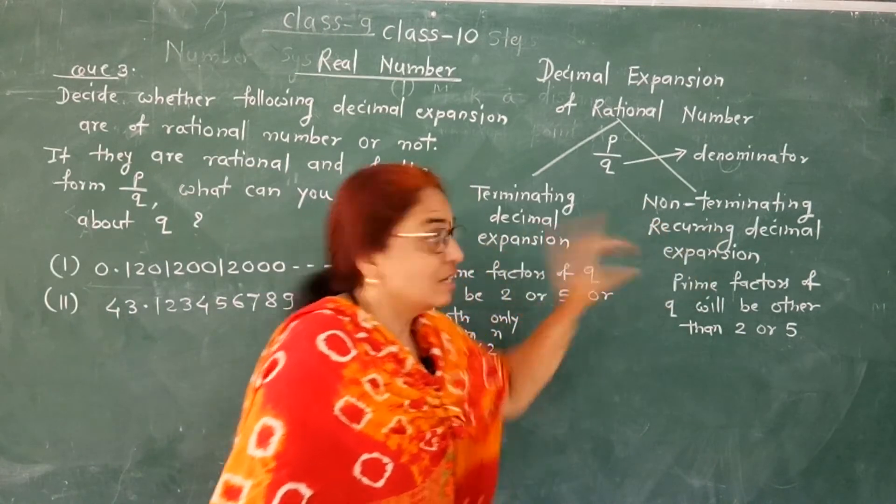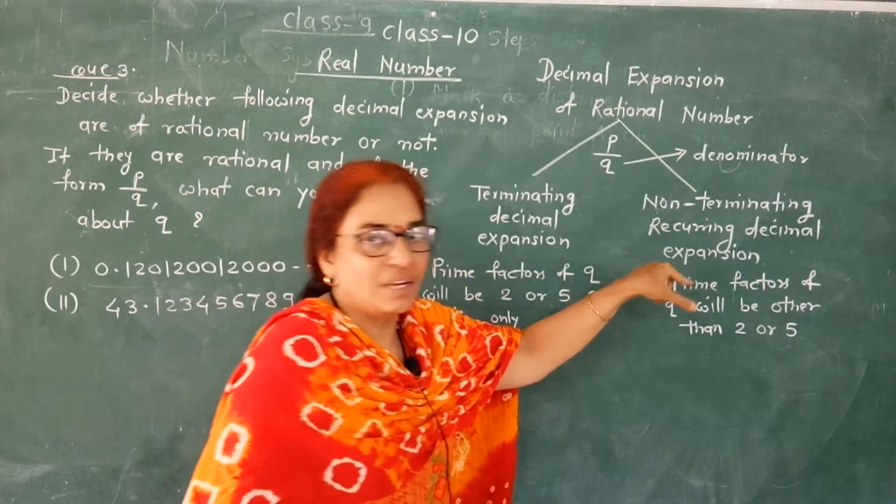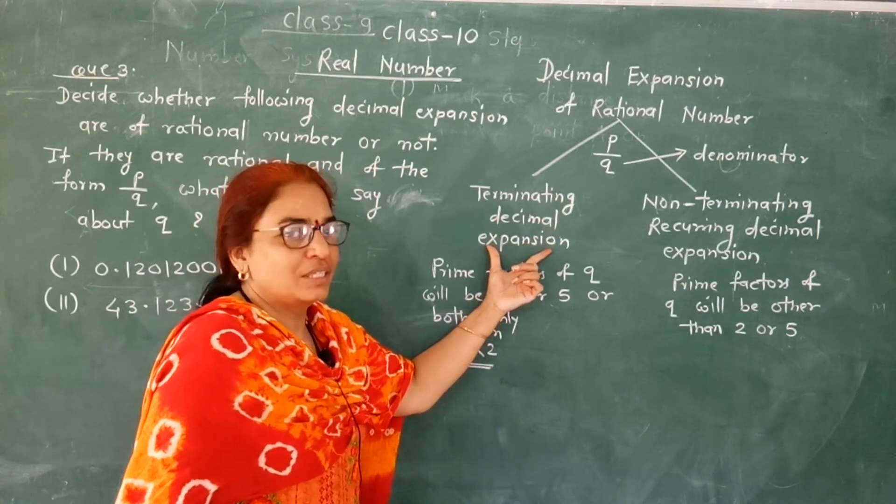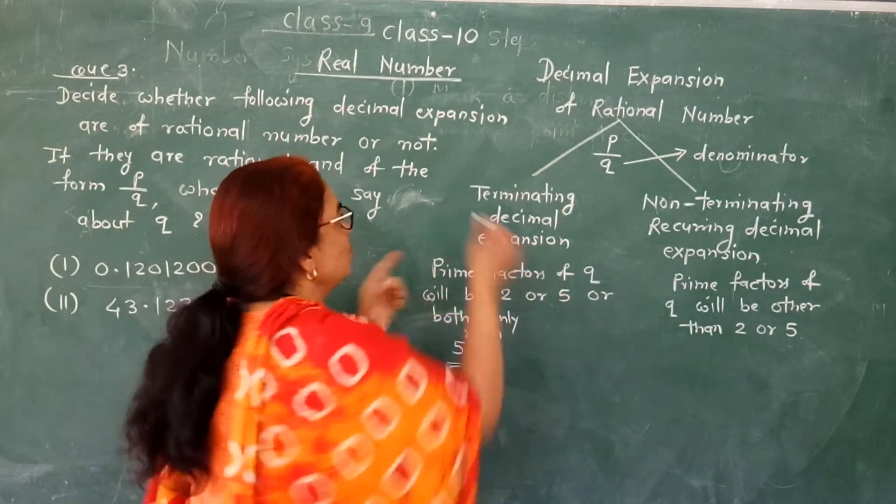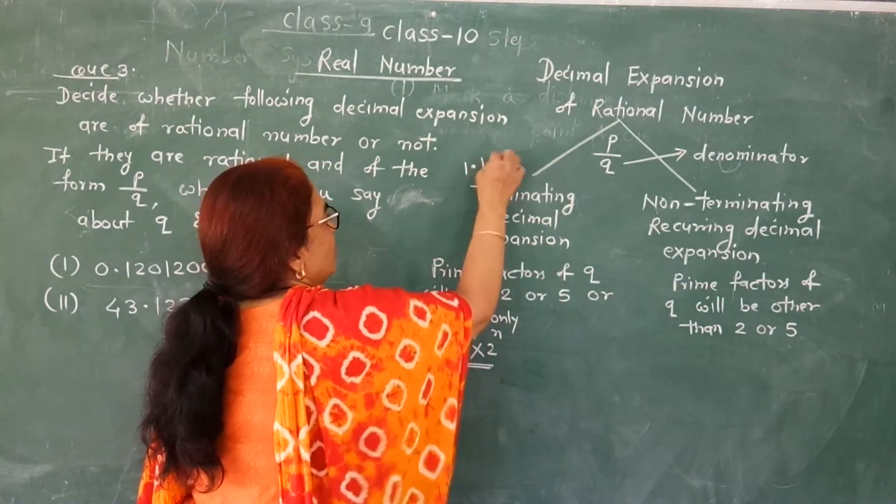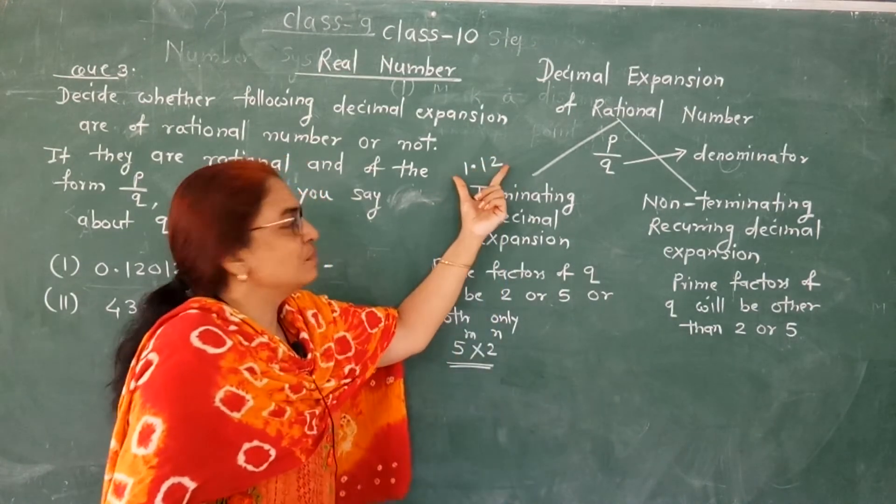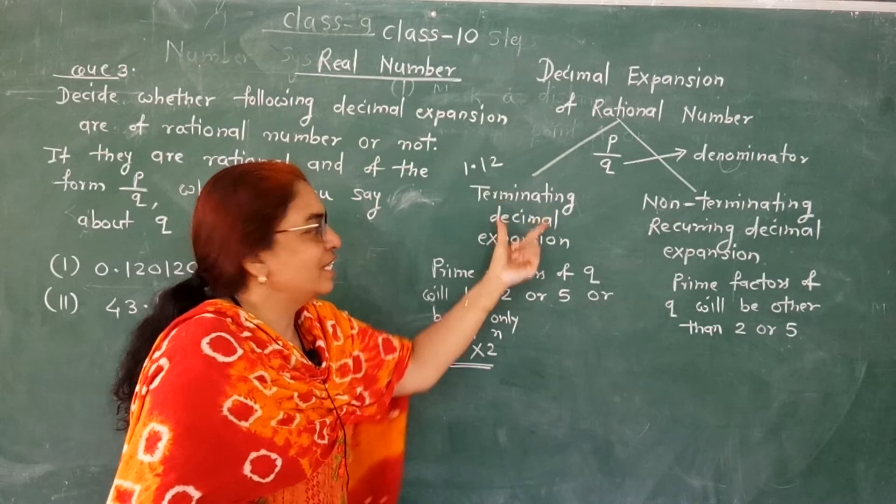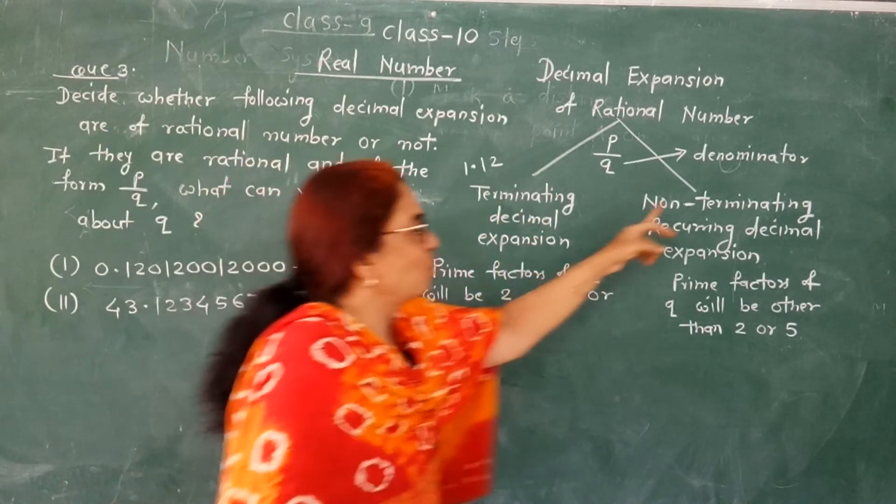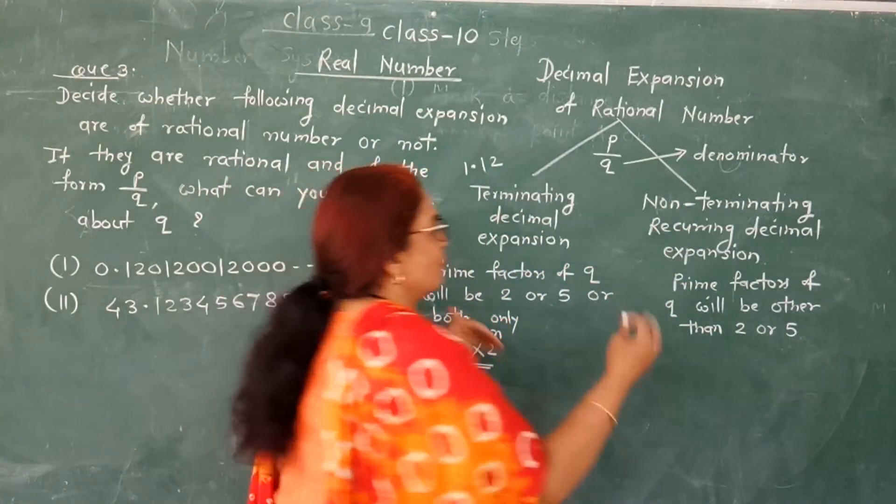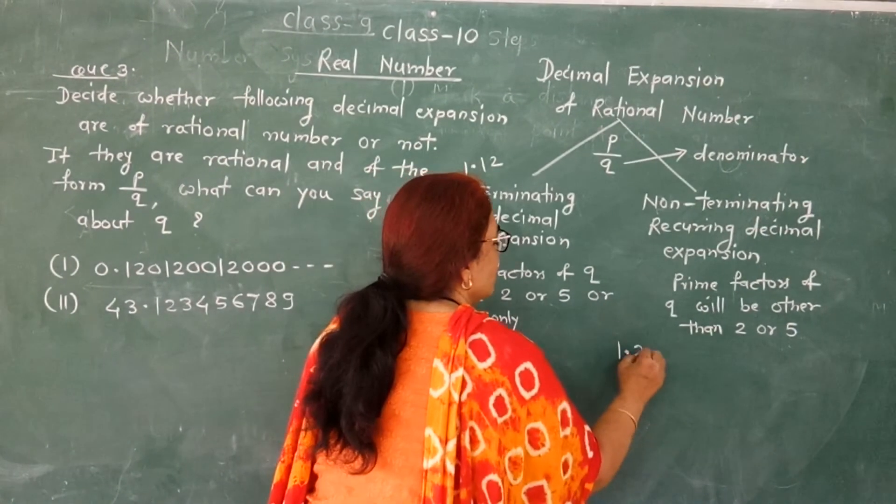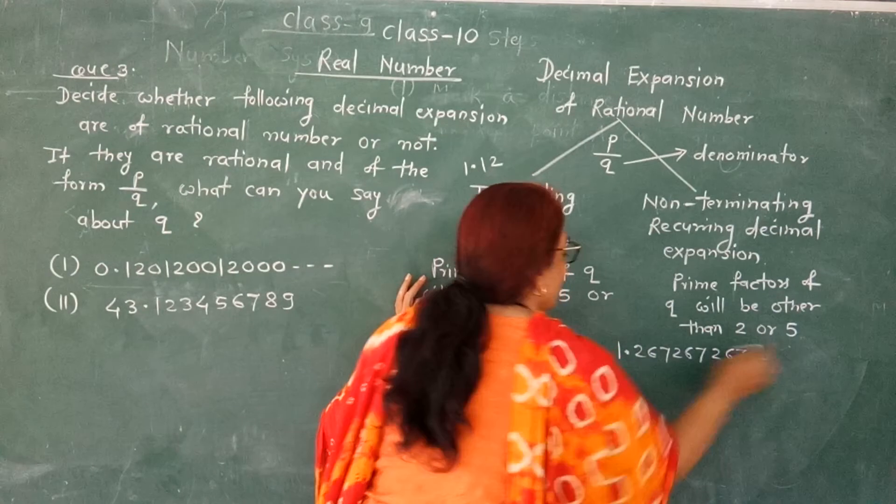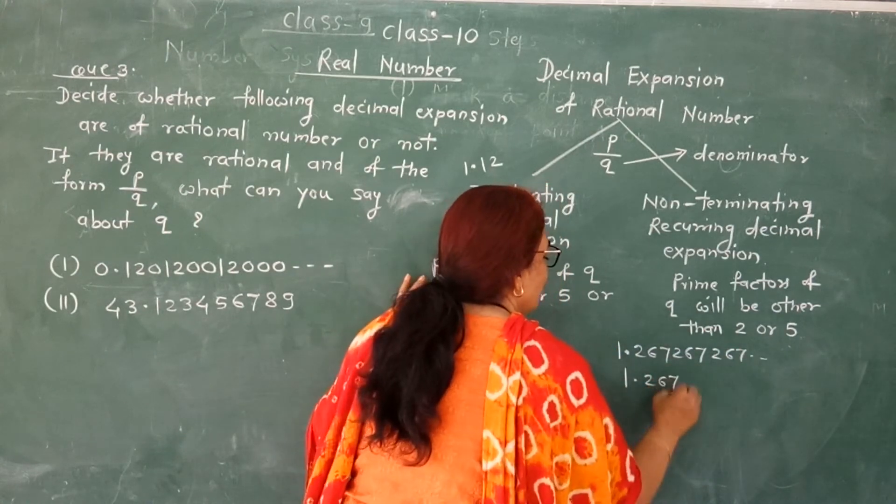For example, one point one two is a terminating decimal expansion. Another example: one point two six seven two six seven two six seven. This is a block that repeats.